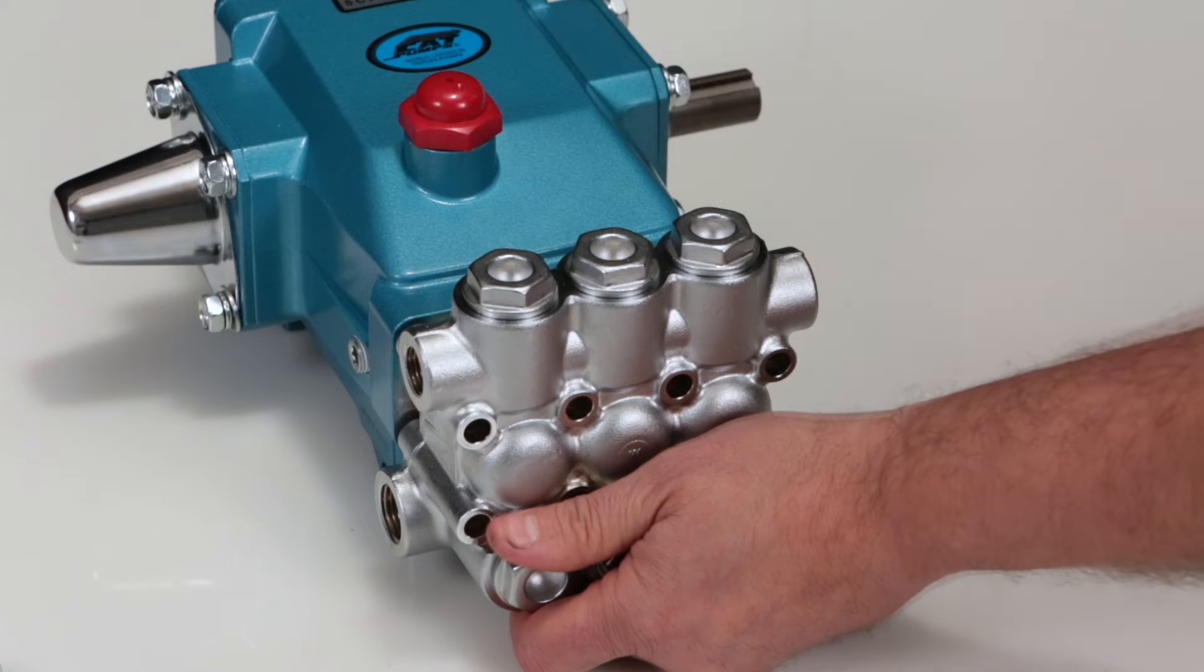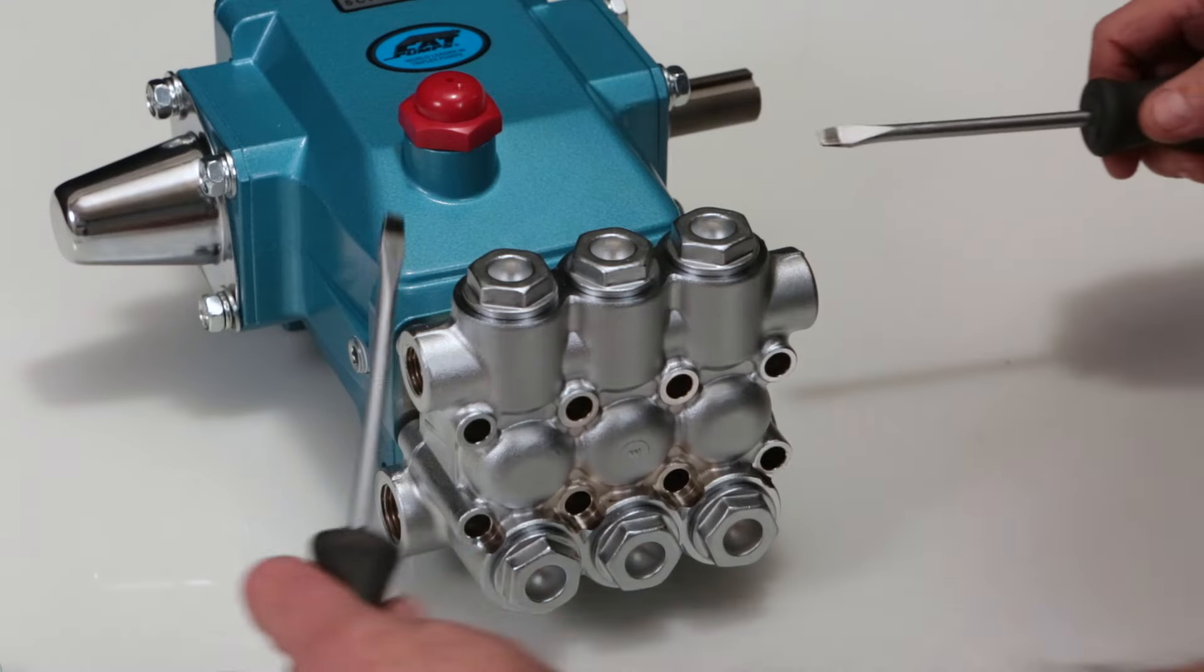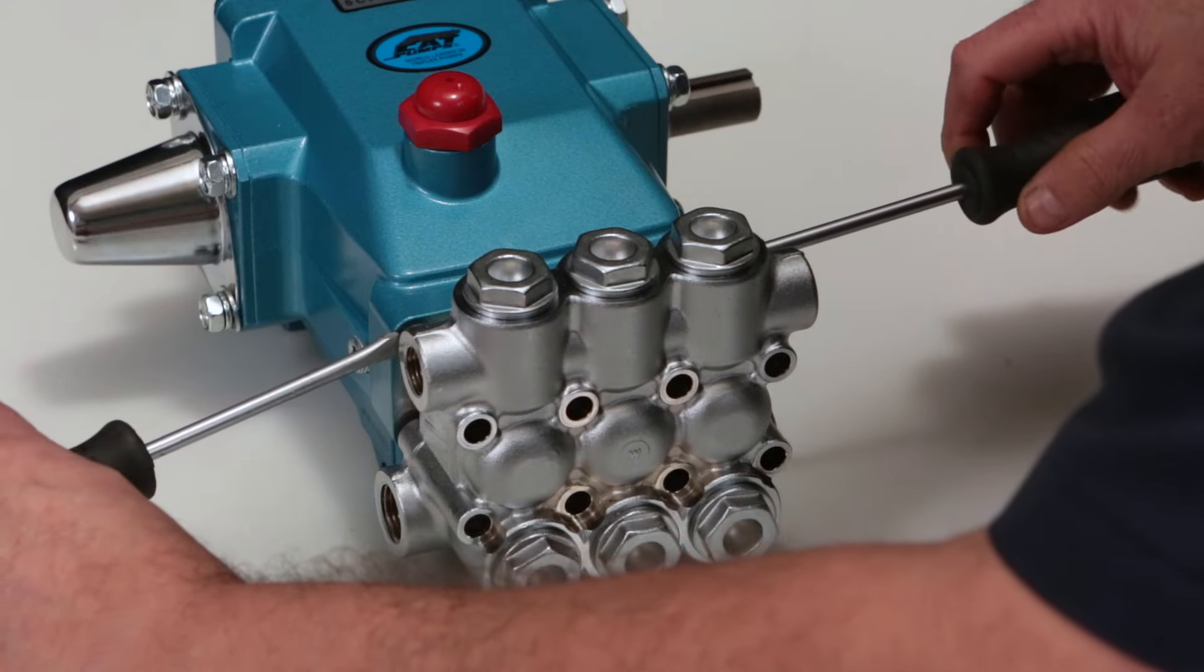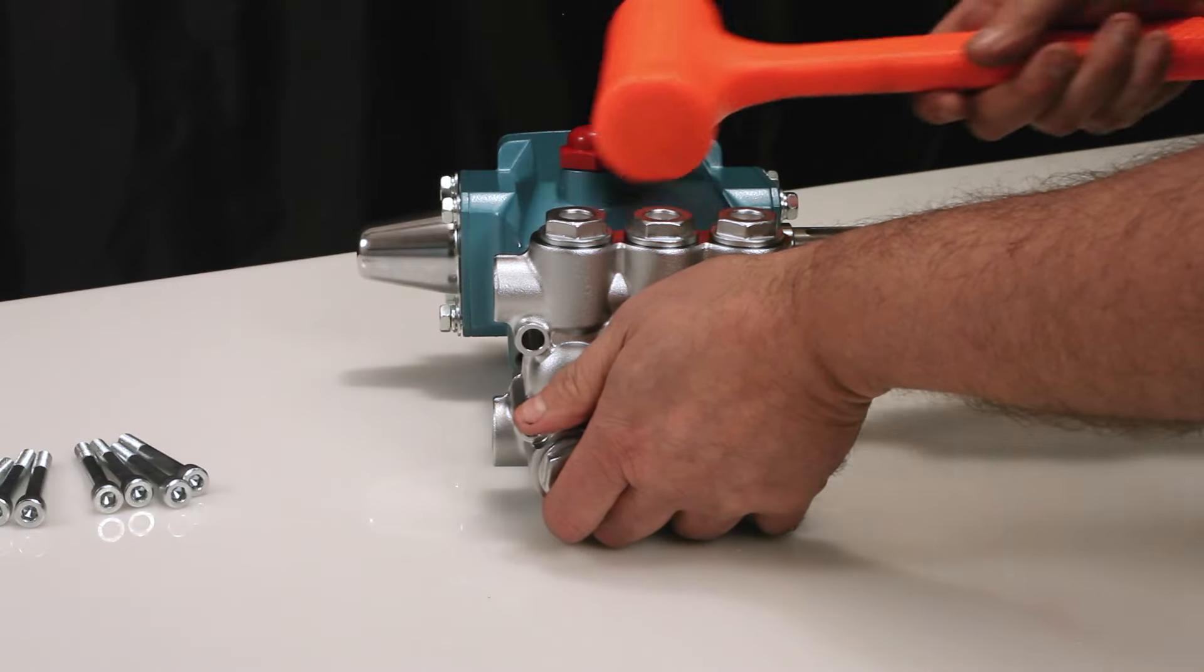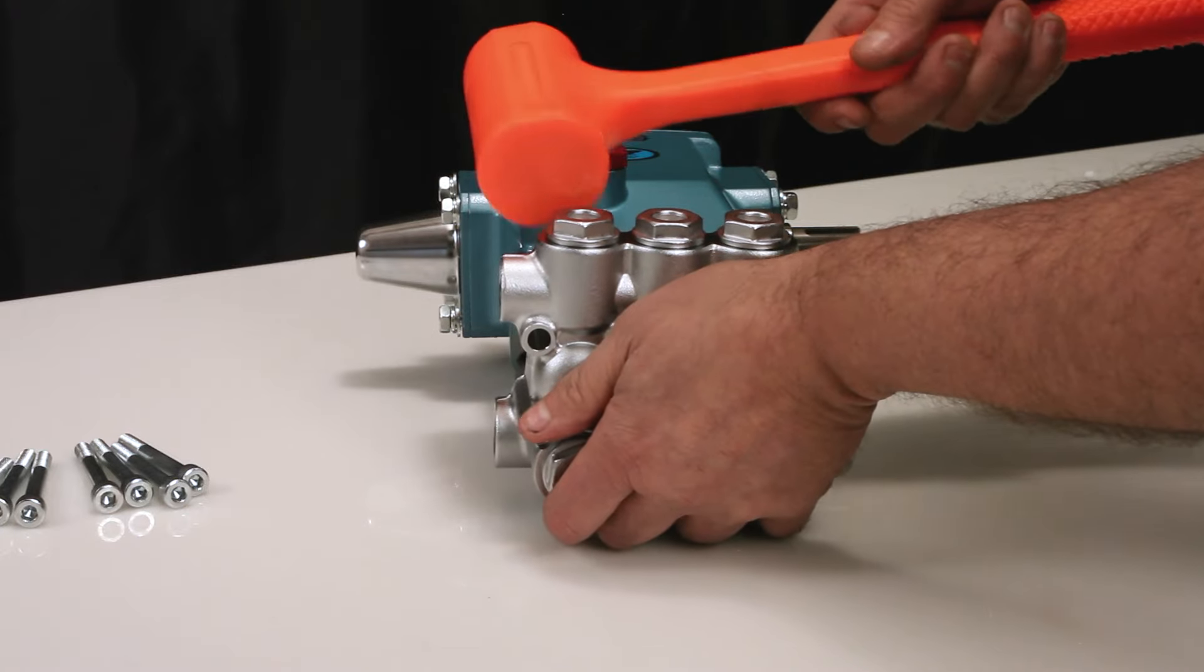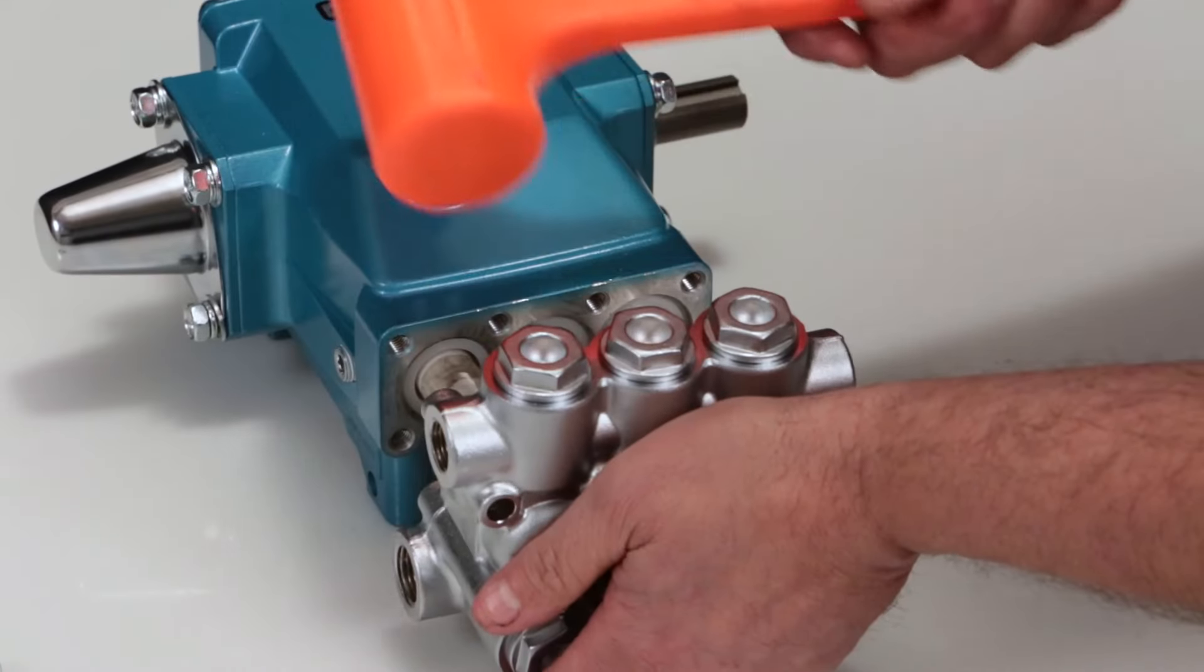Once separation has been made, use two flat tip screwdrivers to pry manifold away from the crankcase. While supporting the weight of the manifold, use a rubber hammer to completely remove manifold from crankcase.